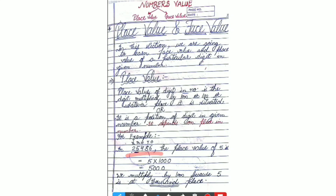Suppose this is the number: 2, 5, 4, 8, 6. The question asks me to calculate the place value of 5. So, first of all, we must know what is the place of 5, and how will we know that? With the help of the place value chart.